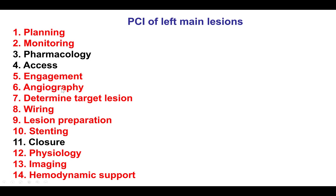Ensure that the left main is well covered. In this case, we decided to wire all three vessels to minimize the risk of losing one of them. Because of heavy calcification, it is important to adequately prepare the lesion, potentially using atherectomy before placing stents. It is mandatory to use imaging in such cases, both because it's a left main and because there is significant calcification. There is also the question of hemodynamic support in a patient with unprotected left main and decreased ejection fraction.